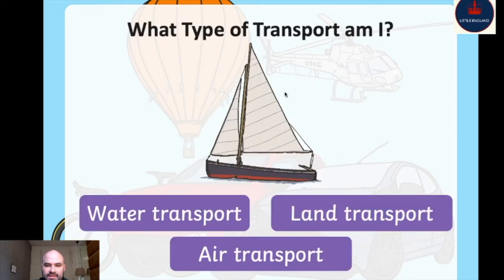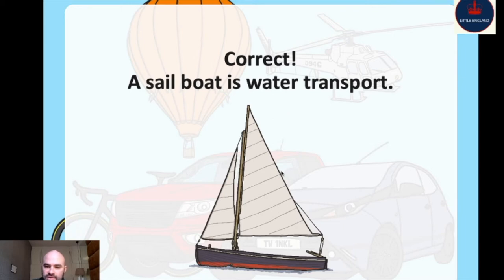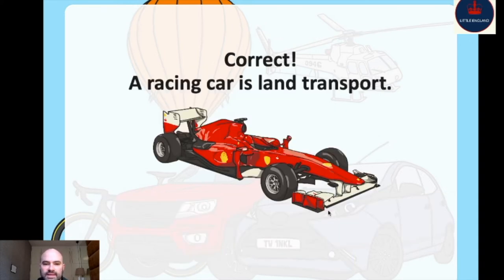This boat, or sailboat, goes by water — not by land and not by air. A sailboat is water transport. And here is a Formula One racing car. A racing car goes by land — we all know that.